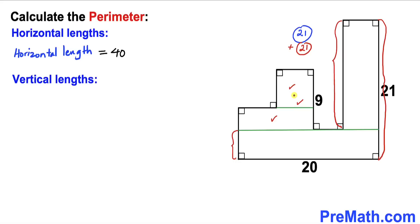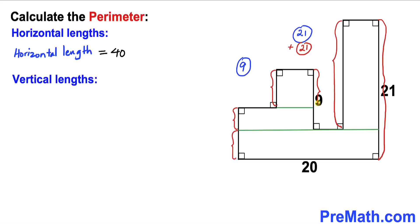We created one more horizontal line, resulting in two more rectangles. In each rectangle, the side lengths are equal to their opposites. We know that this whole side length is 9 units, so the sum of these two line segments is 9 units as well. Finally, this vertical side length is also 9 units, so we add 9 units more.